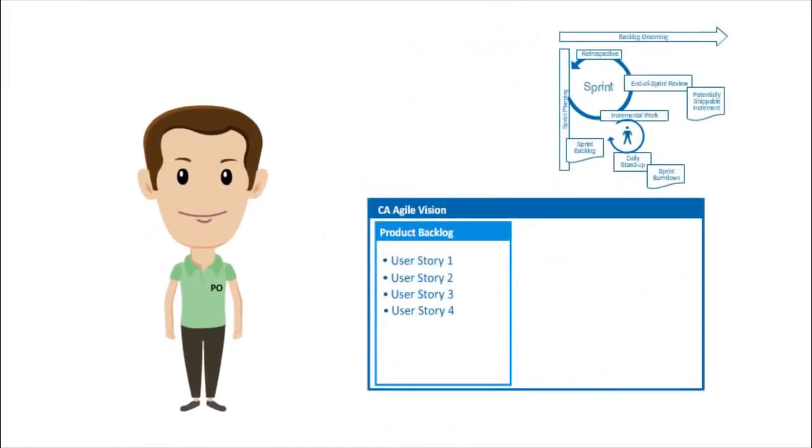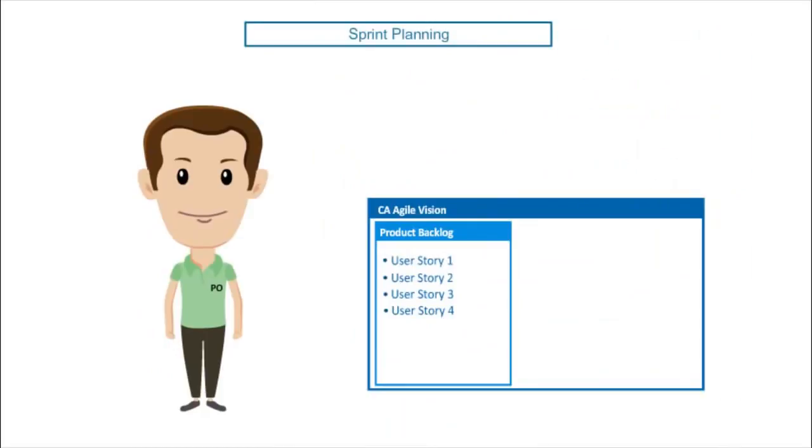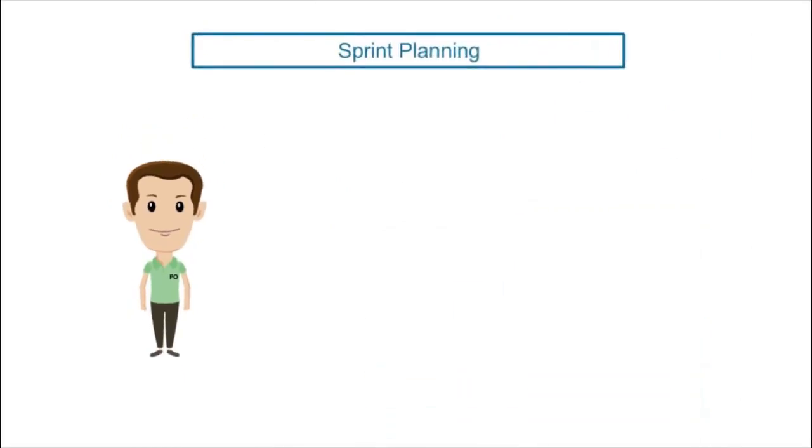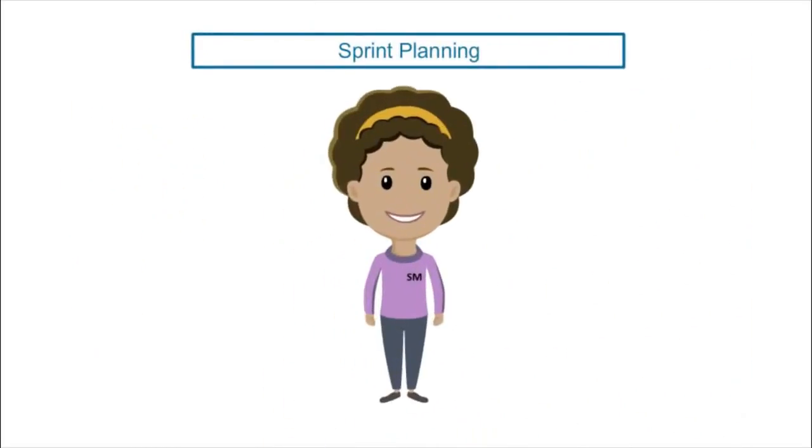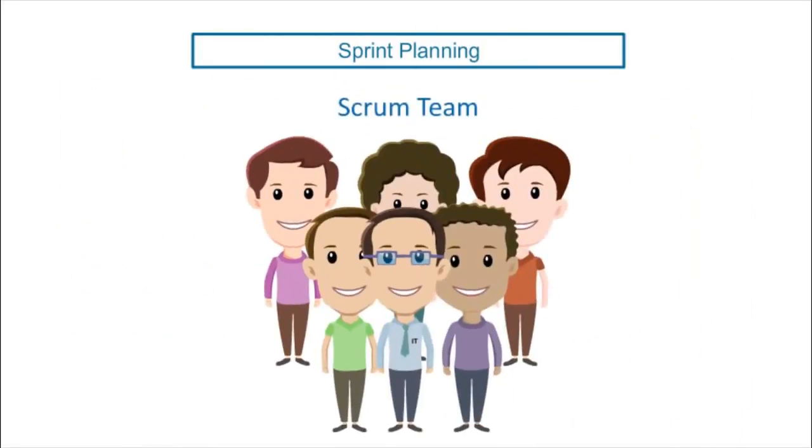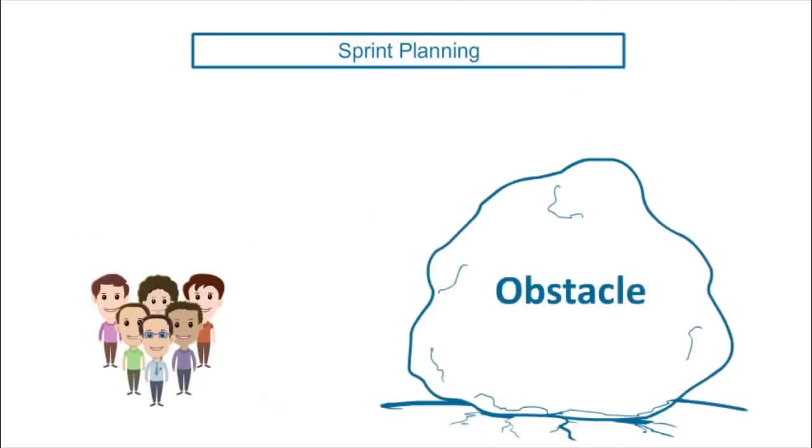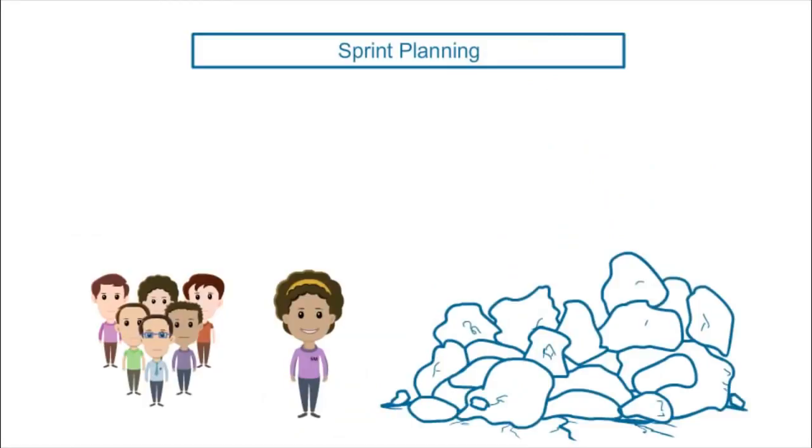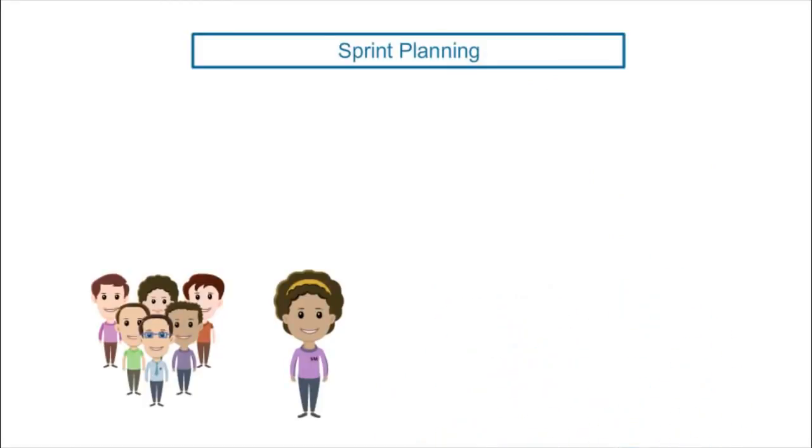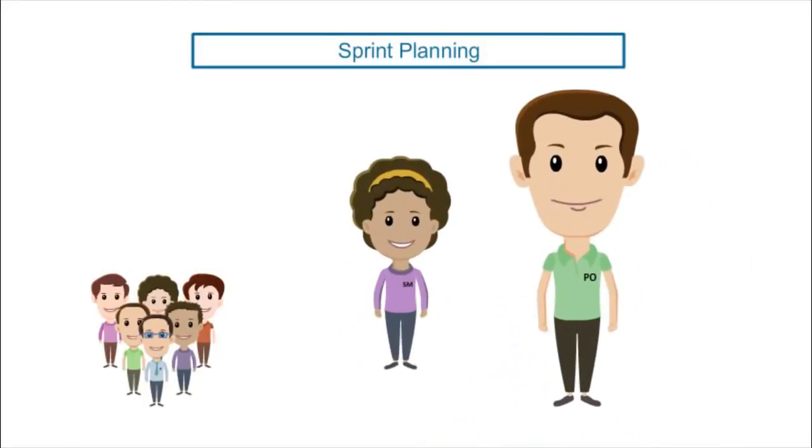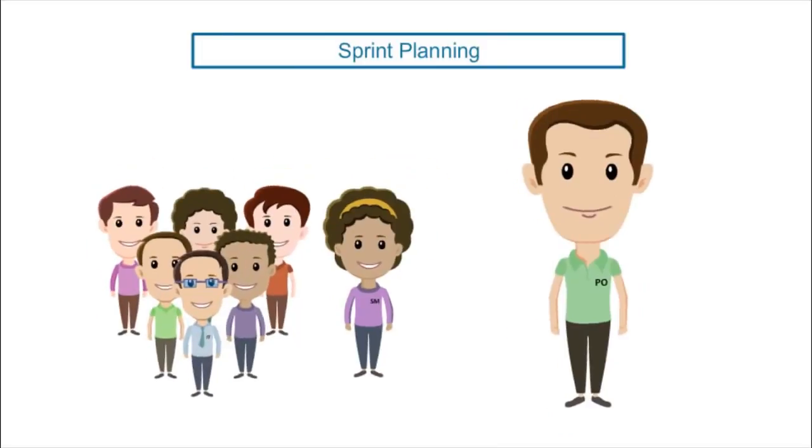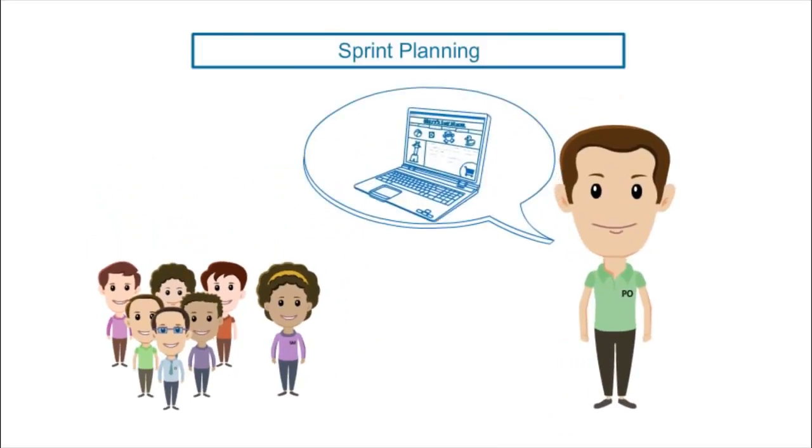Once the product backlog is filled with grooming, Rajesh starts a planning meeting. Rajesh gathers his team together and this includes Tammy, a scrum master, and the scrum team. Tammy facilitates the sprint's planning meeting. She also ensures that the project runs smoothly by removing any obstacles that prevent the team from doing their work.